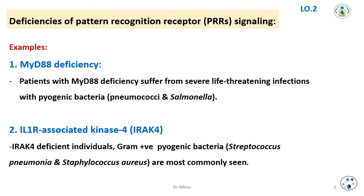In IRAK-4-deficient individuals, gram-positive pyogenic bacteria like Streptococcus pneumoniae and Staphylococcus aureus are most commonly seen.